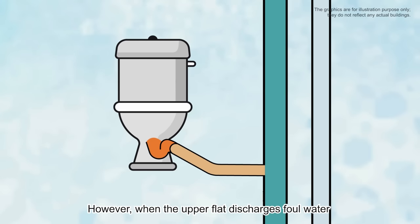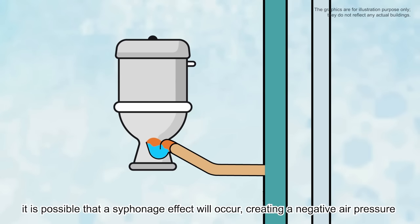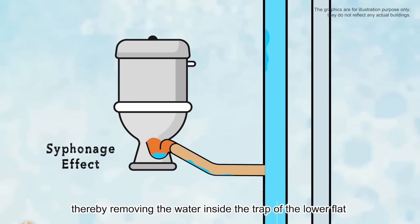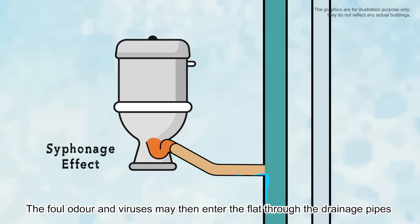However, when the upper flat discharges foul water, it is possible that a siphonage effect will occur, creating a negative air pressure, thereby removing the water inside the trap of the lower flat. The foul odor and viruses may then enter the flat through the drainage pipes.